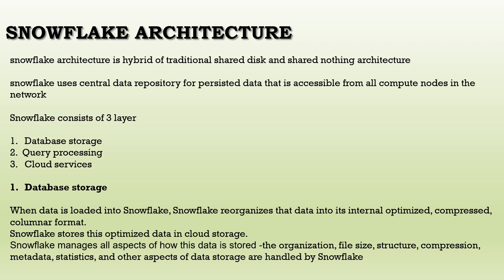In shared nothing architecture, within cloud infrastructure we have a number of nodes. Each node is independent of the others, and different nodes are interconnected by a network. Every node has its own processor, memory, and disk. Nodes do not share memory or cloud storage — that's why it is called shared nothing architecture.